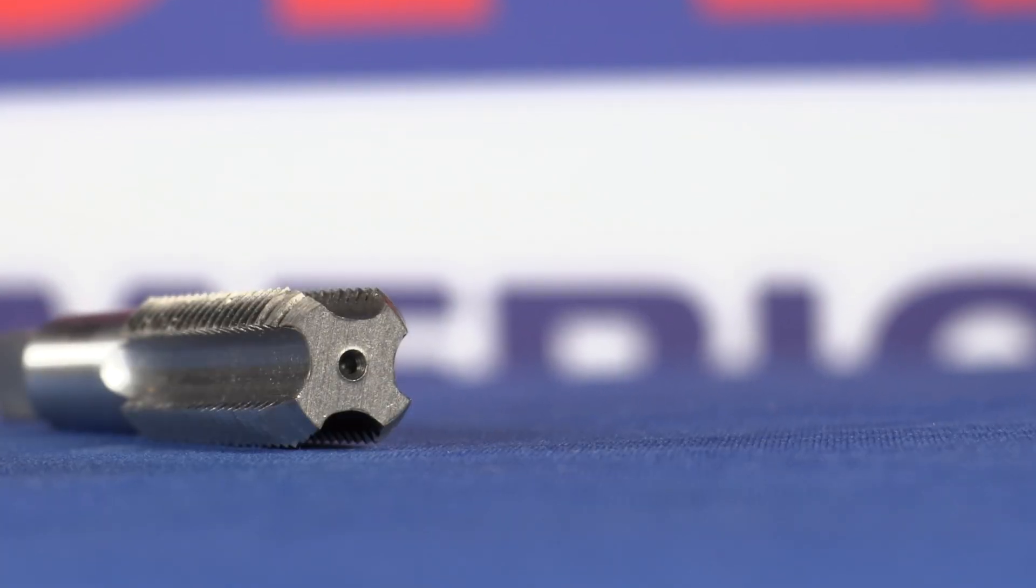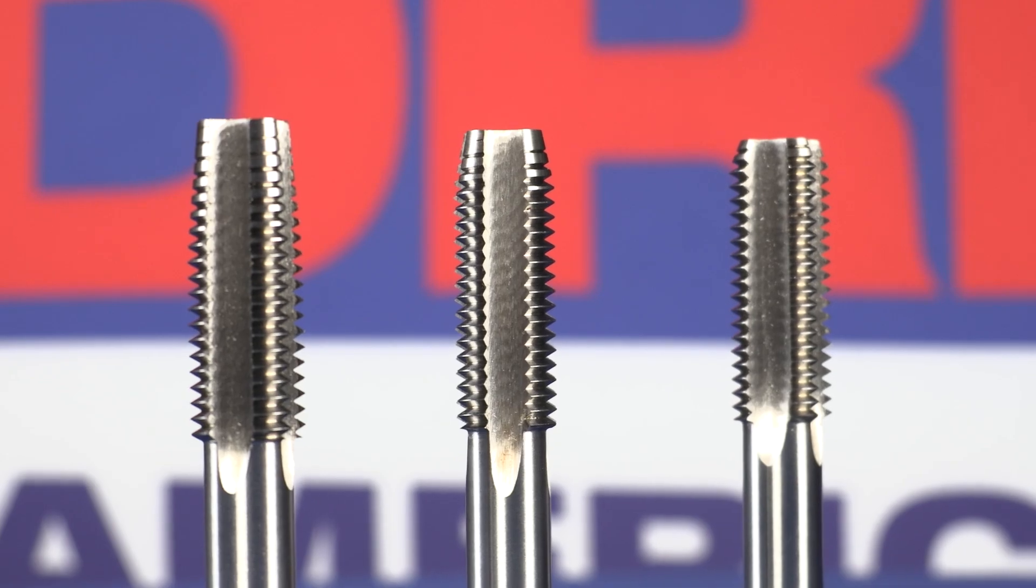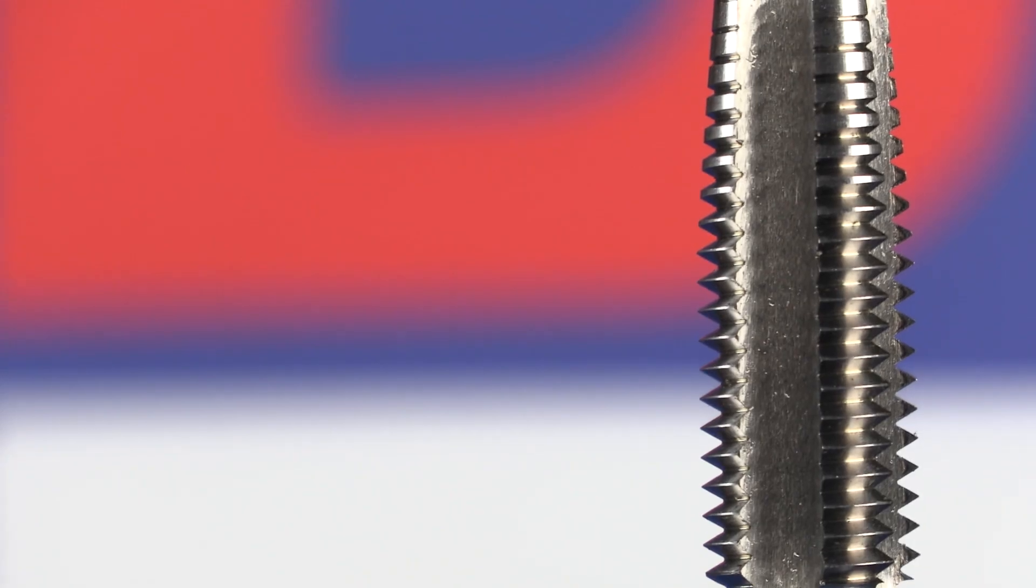Bottom taps generate the thread to the bottom of the hole and have a flat end. A tap set includes one taper, one plug, and one bottoming tap.